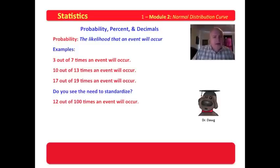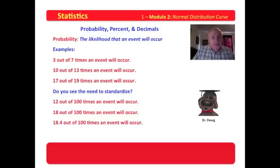Look at some of these. Twelve out of 100 times an event will occur. Eighteen out of 100. 18.4 out of 100 times an event will occur. Doesn't it occur to you as you look at these that by standardizing these on so many events out of 100, we have a much easier way to compare. We can instantly recognize that 18.4 times happens more than twelve out of 100 or more than eighteen out of 100. This makes comparison much easier.